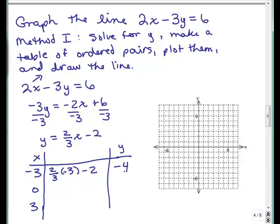That's going to give me the ordered pair negative 3, negative 4. 2 thirds times 0 minus 2 is going to give me negative 2. And 3 is 0.